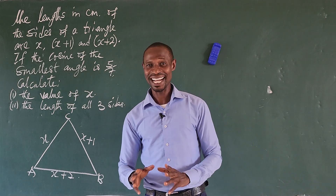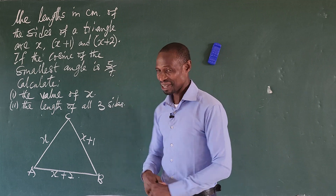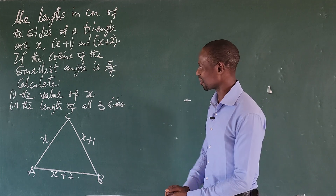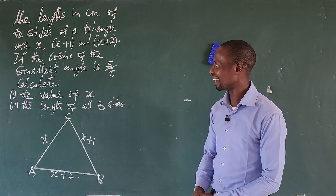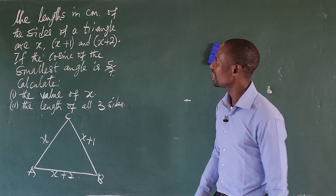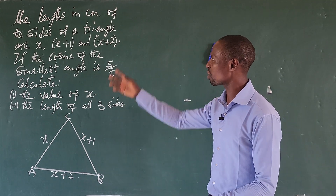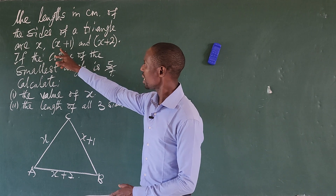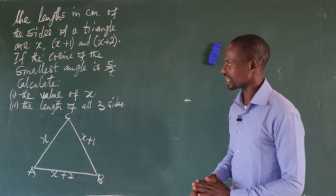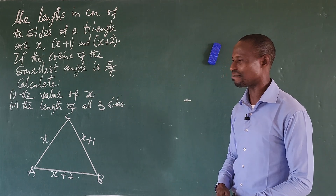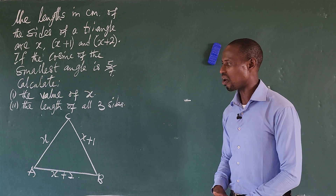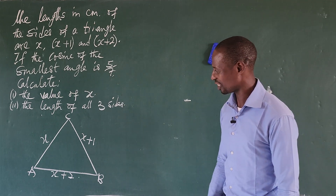Hello everyone, welcome to today's math class. Today we have an unusual question — it belongs with trigonometrical questions, but I saw this question and felt it should be made known. The question reads: the lengths in cm of the sides of a triangle are x cm, x plus 1 cm, and x plus 2 cm. If the cosine of the smallest angle is 5 over 7, calculate: 1) the value of x, and 2) the length of all three sides.